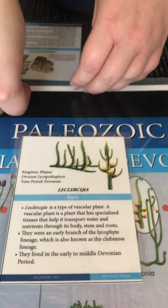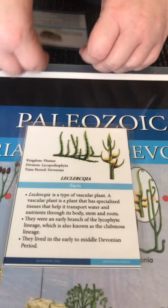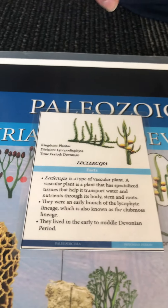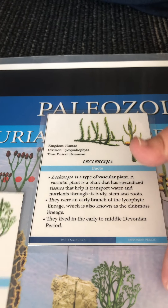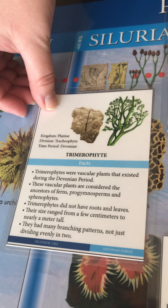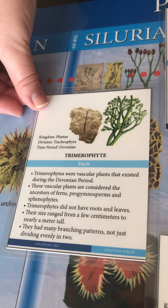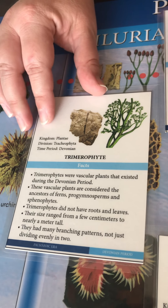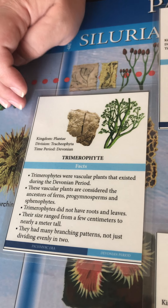Also, the Trimerophyte appeared in the Devonian — though I'm going to put its card in the Silurian just because I'm kind of out of room.